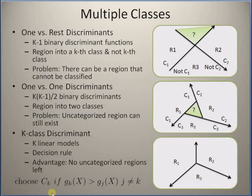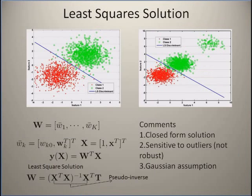The k-class discriminant function works because of its decision rule: it categorizes sample x into class c_k if its discriminant g_k(x) is greater than all other discriminants for classes not equal to k. It simultaneously considers all k classes and determines the optimal class — the one with the maximum discriminant value.